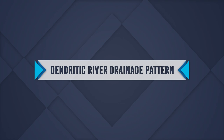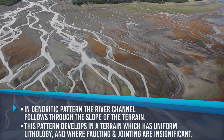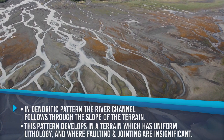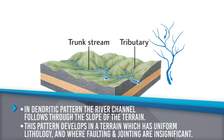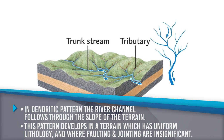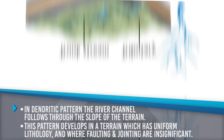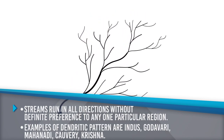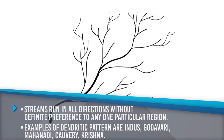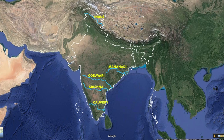Dendritic River Drainage Pattern: In this pattern, the river flows through the slope of the terrain. This pattern develops in terrain with uniform lithology where faulting and jointing are insignificant. The stream runs in all directions without definite preference to any one region. Examples of the dendritic pattern are Indus, Godavari, Mahanadi, Kaveri, and Krishna.